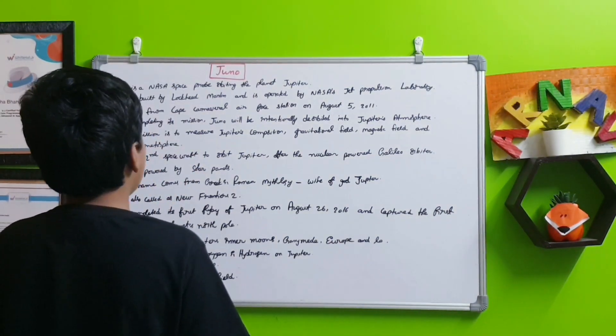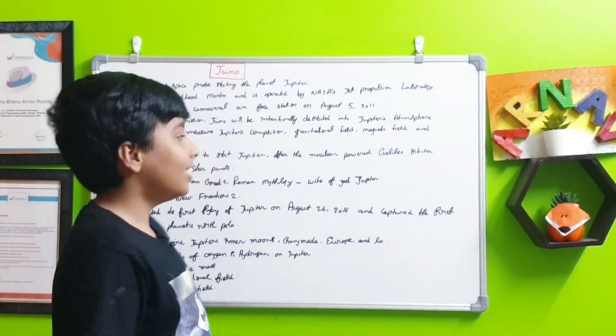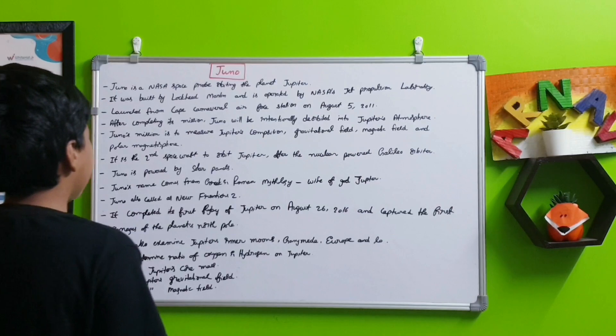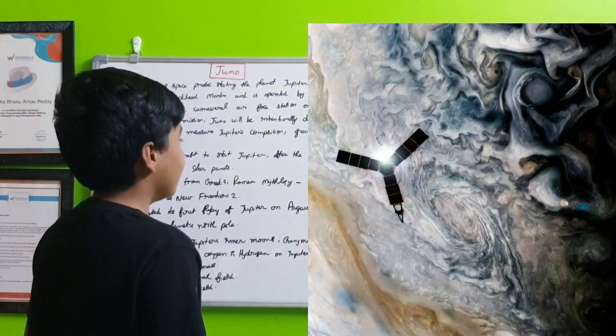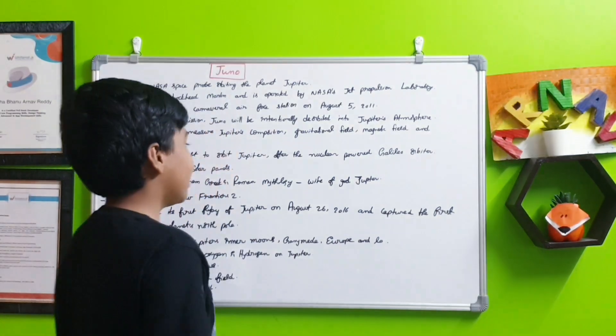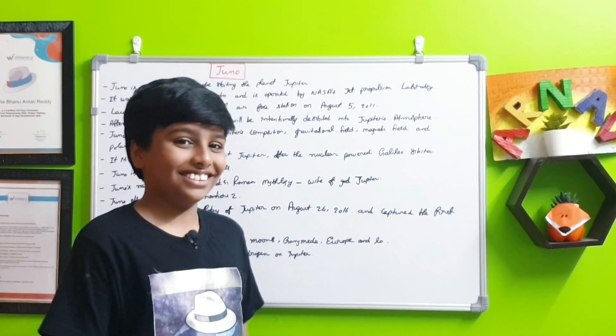It is the second spacecraft to orbit Jupiter after the nuclear-powered Galileo orbiter. Juno is powered by solar panels, while Galileo was powered by nuclear energy. So Juno is completely renewable energy, eco-friendly.